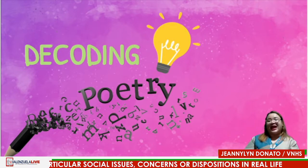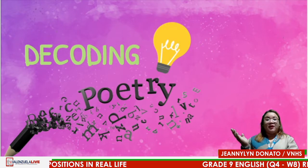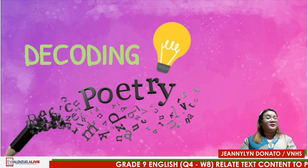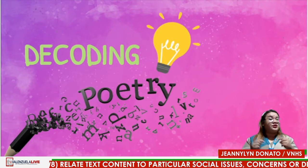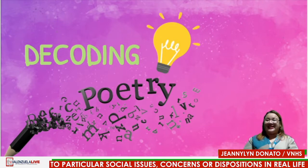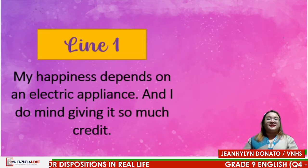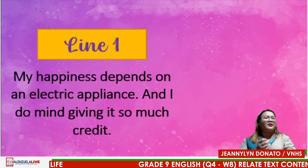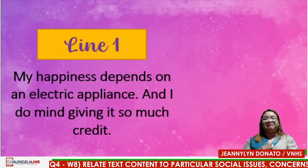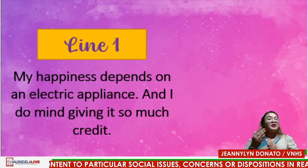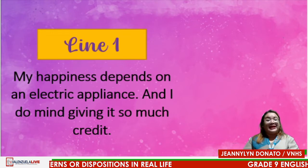I hope you read and listened well, class. Now, for you to understand the poem, I have chosen five lines from it. Let's have this activity: Decoding Poetry. To interpret the meaning of the poem, we will try to decode the message of the lines I will be sharing to you. I will ask a question about each line and you are free to comment your answers below. For our first line: 'My happiness depends on an electric appliance and I don't mind giving it so much credit.' What do you think is the predominant feeling of the speaker in these lines? Happiness and being grateful is the predominant feeling of the speaker.